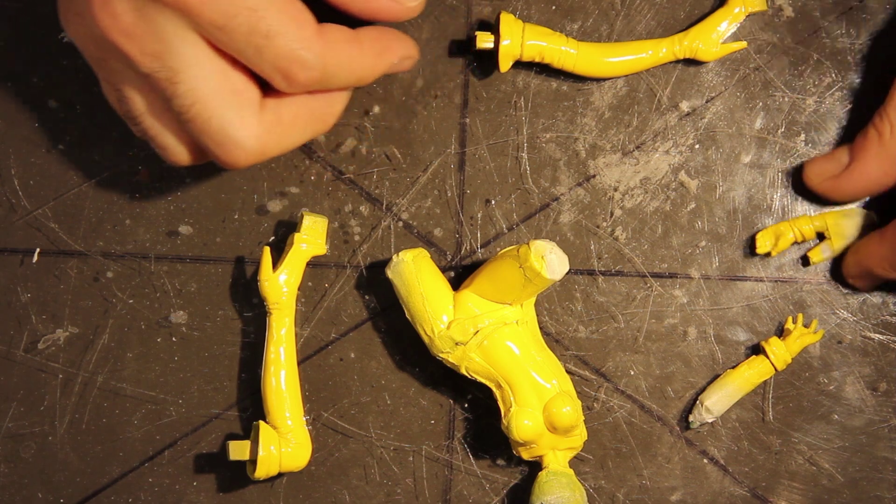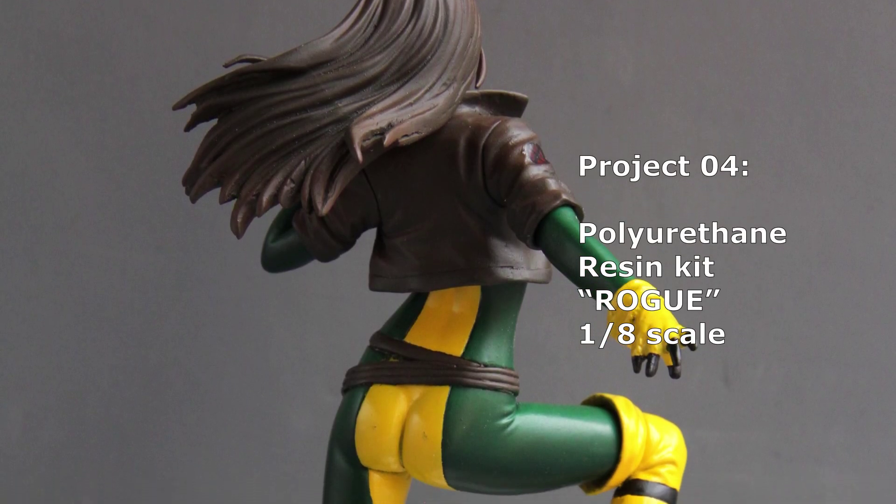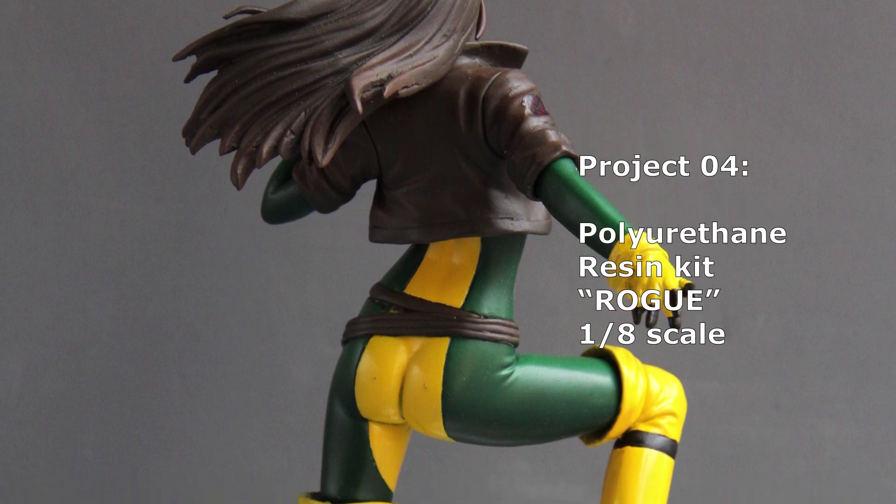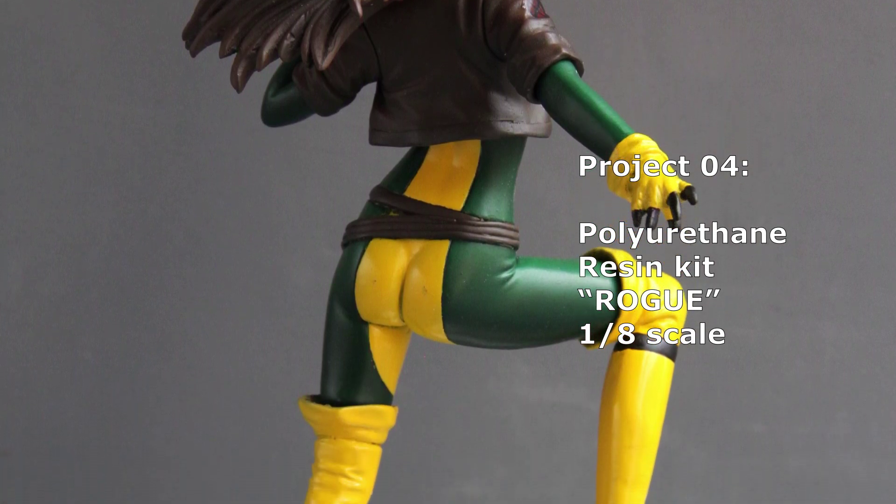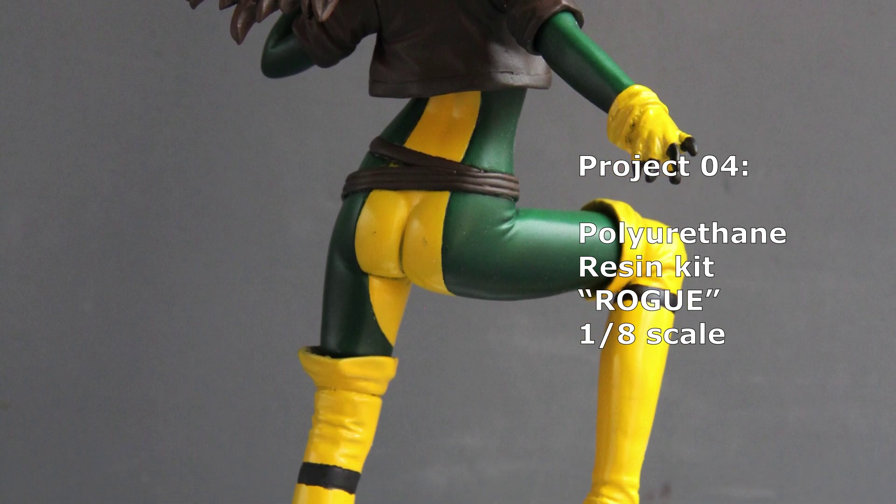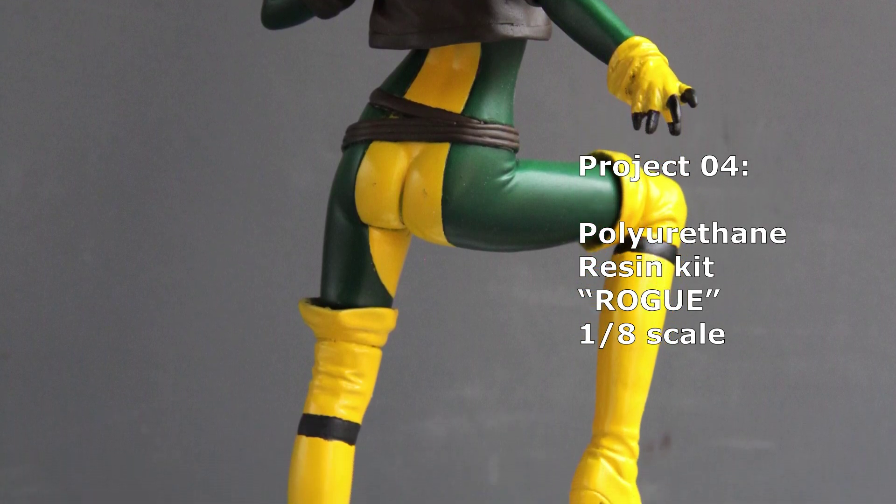After masking I applied the glossy yellow paint over the parts. You should consider that glossy paints tend to leave thicker paint coats that may rough the mask borders a little bit. This is why I chose to do this gloss paint at last.